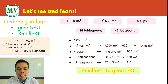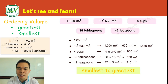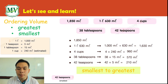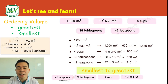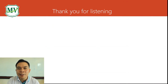Now let's order these volumes from smallest to greatest. The greatest volume is 1850 milliliters and the smallest is 42 teaspoons, which equals 210 milliliters. So the order is: first 42 teaspoons, next 38 tablespoons, then 4 cups (960 milliliters), then 1 liter 630 milliliters, and finally 1850 milliliters as the greatest. That's all for today — thank you for listening, goodbye!